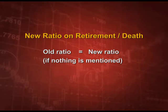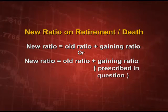How to calculate the new ratio on retirement or death? If nothing is given, the old ratio will be taken as the new ratio. Suppose A, B, C are partners, B dies and nothing is mentioned - so A and C will share in the same ratio as their existing ratio. That is, old ratio equals new ratio if nothing is mentioned. But if something is mentioned, then new ratio will be calculated accordingly - that is old ratio plus whatever they have gained on the retirement or death of that partner. So new ratio equals old ratio plus gaining ratio, or old plus gaining ratio as prescribed in the question itself.